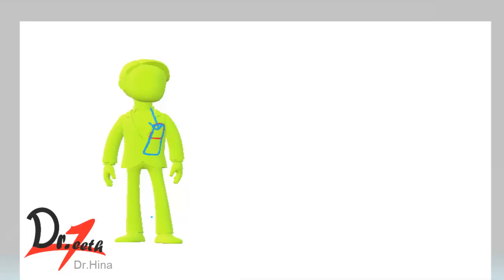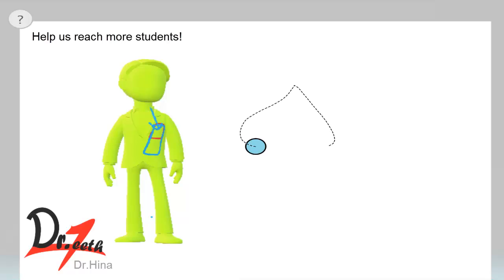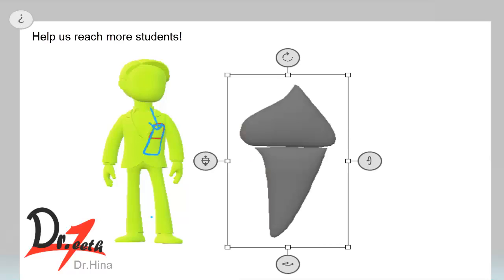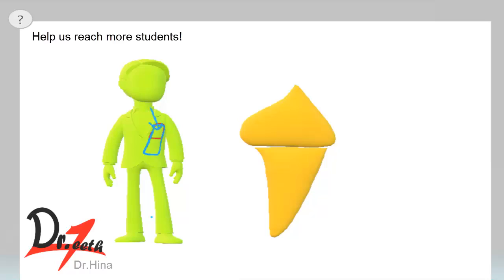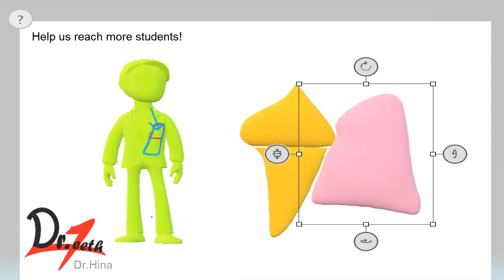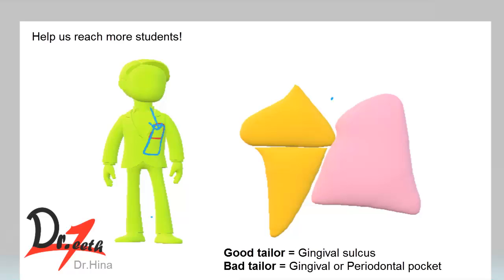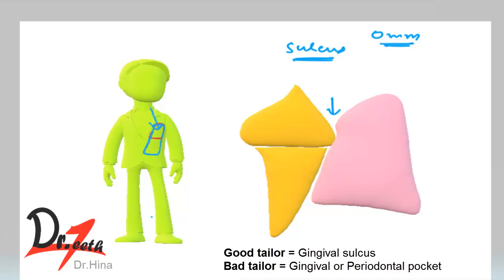Similarly, we also have a space between the teeth and the gingiva. So this is our tooth and this is the gingiva. The space between the tooth and the gingiva is called the gingival sulcus. Theoretically it should be 0 mm, but since nobody is truly disease-free, the normal clinically accepted sulcus depth is 2 to 3 mm.